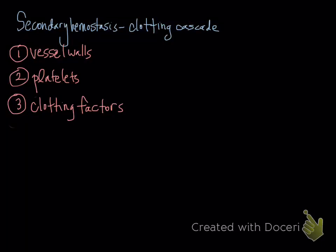We're moving on to secondary hemostasis, which involves the clotting cascade. We already went over the interplay of vessel walls and platelets; now we're going to talk about clotting factors. These three are extremely intertwined. The eventual goal is that clotting factors work on the backbone of platelets adhering to vessel walls, and they eventually convert fibrinogen into fibrin. The fibrin clot is what we're actually talking about when we discuss clot production and coagulation. Whereas platelets are made in the bone marrow, most clotting factors are made by the liver.